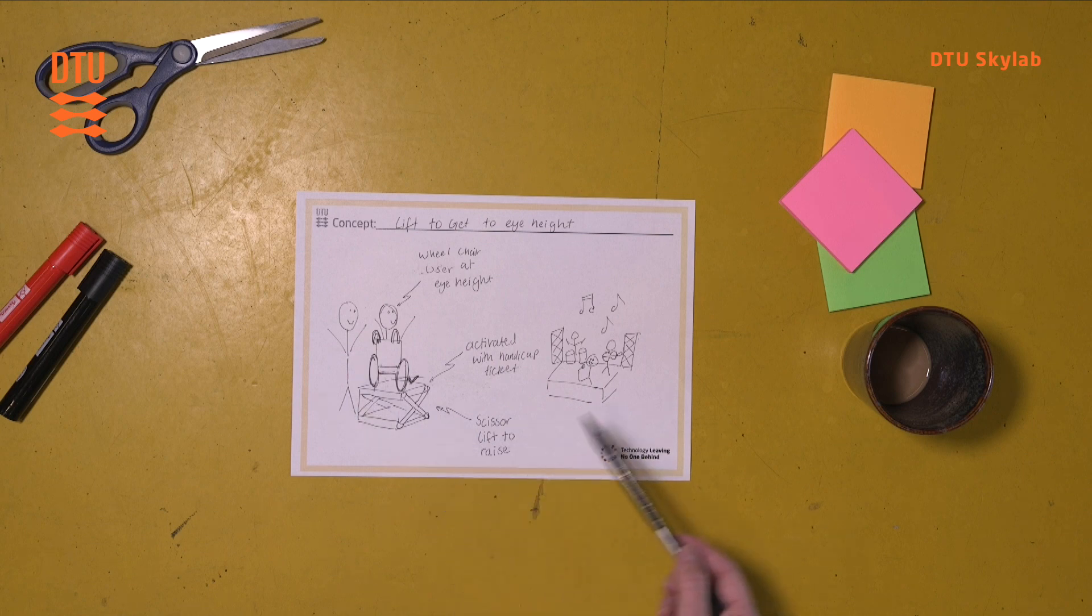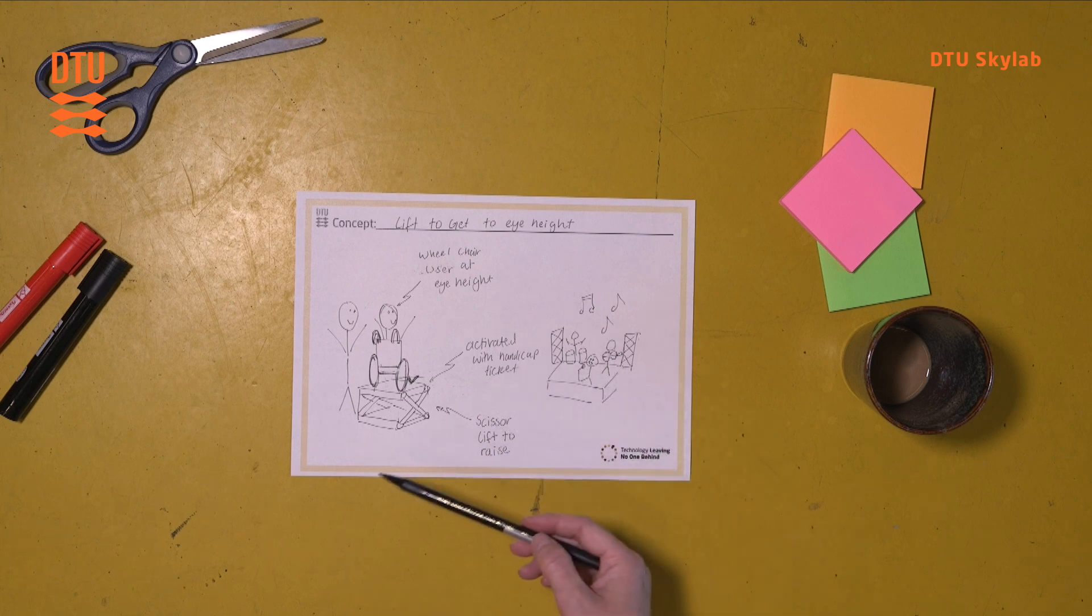In that sense, the sketch becomes a boundary object, which is really good for communication and to be able to create a shared understanding and a deeper understanding into the ideas that you're trying to convey.